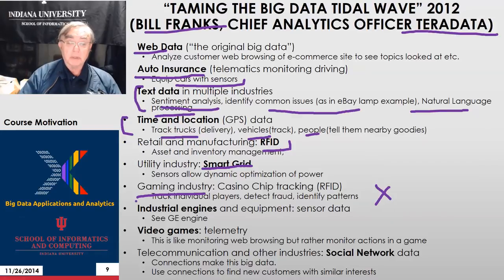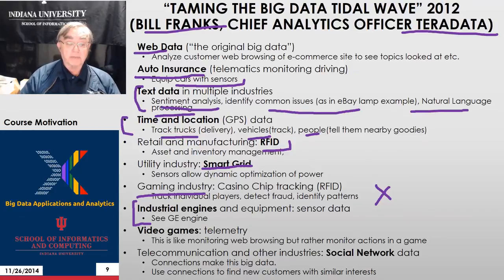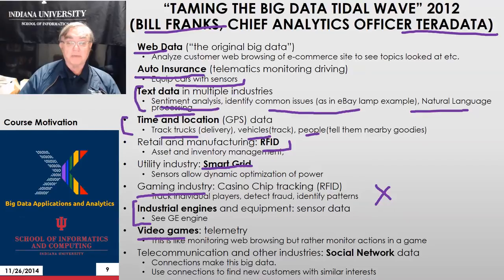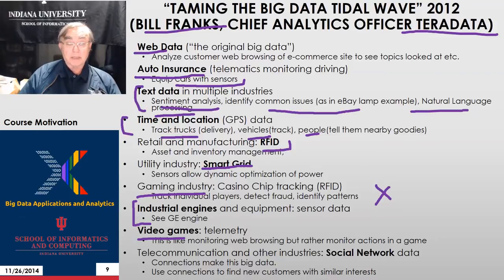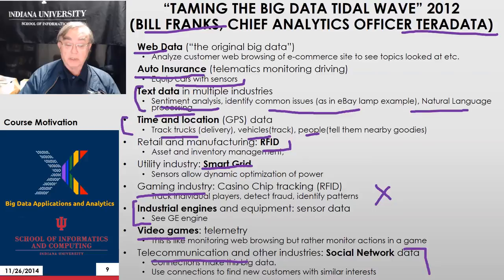GE's analysis of industrial engines is the industrial internet. Sensor data in enormous amounts allows far more reliable monitoring of large equipment. Video games are a little like the web data and auto insurance examples — you have telemetry monitoring how people play games to design better games and see what people like. There's also a broad social media example in the telecommunications industry — Facebook and so on — where linkage of people to people allows you to find new customers automatically using recommender engine-like technology.